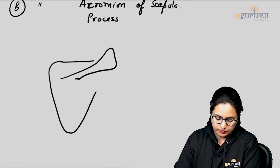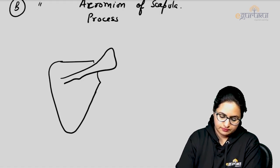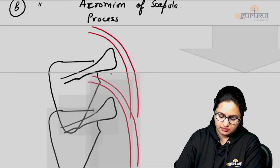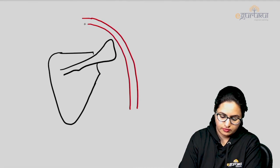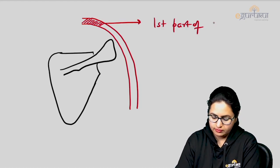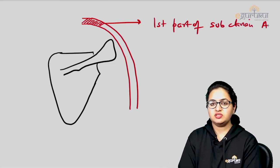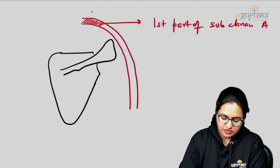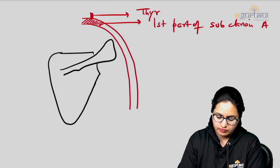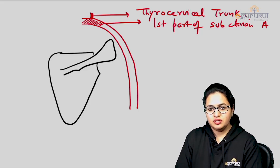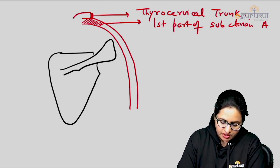In the diagram, the subclavian artery continues as the axillary artery. The first part of the subclavian artery gives branches: the vertebral artery, the internal thoracic (internal mammary) artery, and the thyrocervical trunk. The thyrocervical trunk further gives branches: the suprascapular artery, the inferior thyroid artery, and the transverse cervical artery. Two of these — the suprascapular artery and the transverse cervical artery — participate in forming the anastomosis.